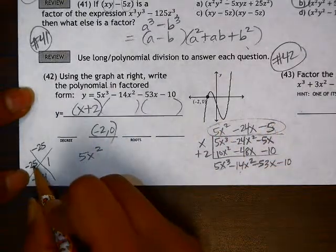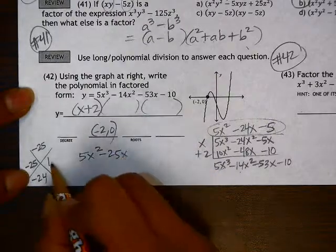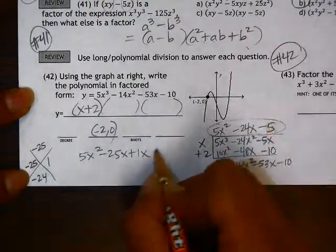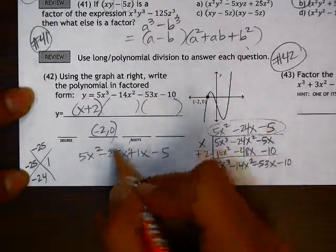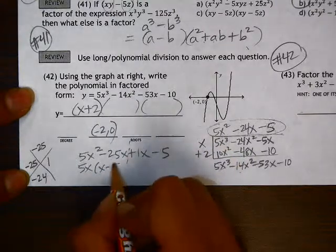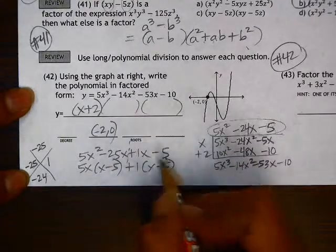The factors of this you can get by doing factoring by grouping. 5x squared minus 25x plus 1x minus 5. Factor by grouping gives us 5x times x minus 5 plus 1 times x minus 5.